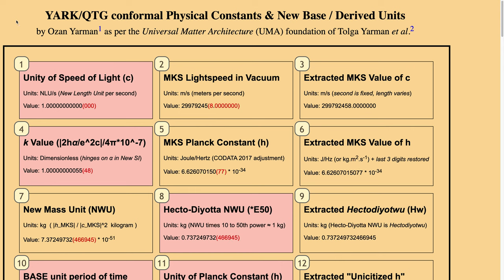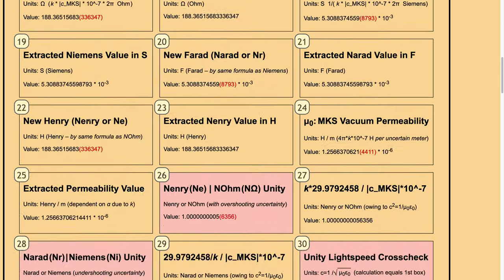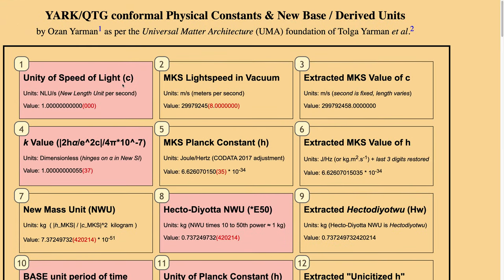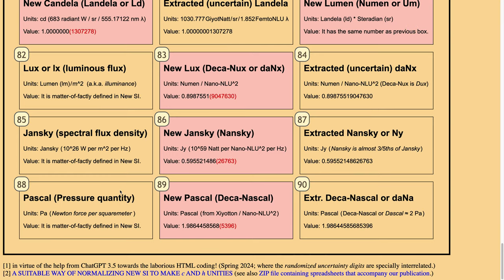The title of the web page is Yarman-Larik Kolmietski / Quantal Theory of Gravity Conformal Physical Constants and New Base Derived Units by Ozan Yarman, with help from ChatGPT 3.5 for the laborious HTML coding in spring 2024, where the randomized uncertainty digits are especially interrelated as per the Universal Matter Architecture Foundation of Tolga Yarman et al. Here is the preliminary paper to be published soon, including a zip file containing spreadsheets that accompany the publication.